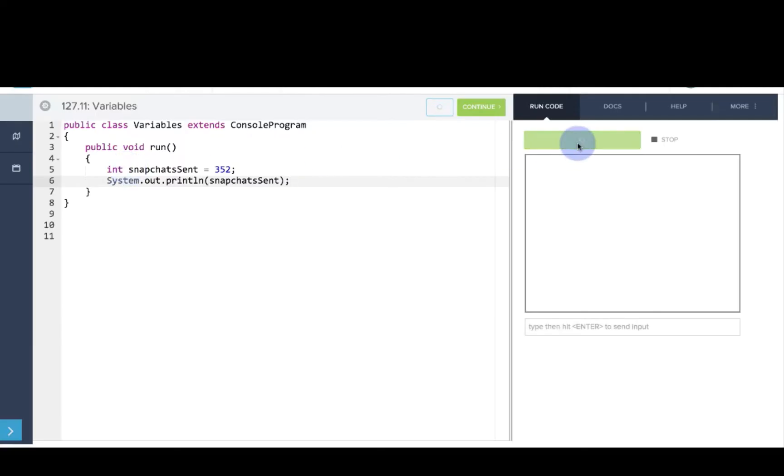Now let's print that out: System.out.println snapchatsSent. When we run this code we'll print out 352, but you might want to write something more descriptive than just a number. We'll add some text to that: we'll say number of snapchats sent and then end quotes and then plus snapchatsSent. What this is doing right here is actually going to print out a string and then our variable. This is called concatenating when we're combining strings with other strings or strings with other variables. Notice it doesn't print snapchatsSent, it prints the value of that variable.